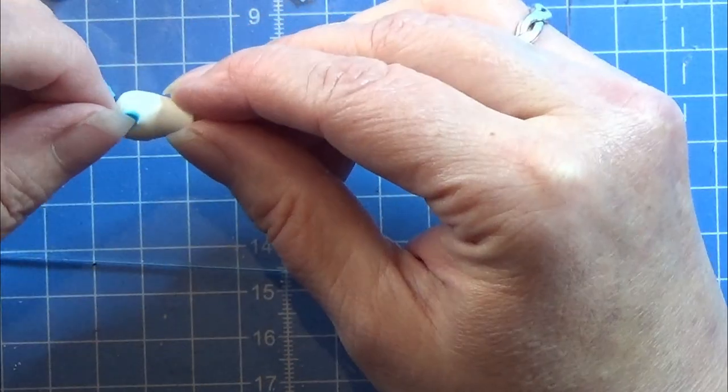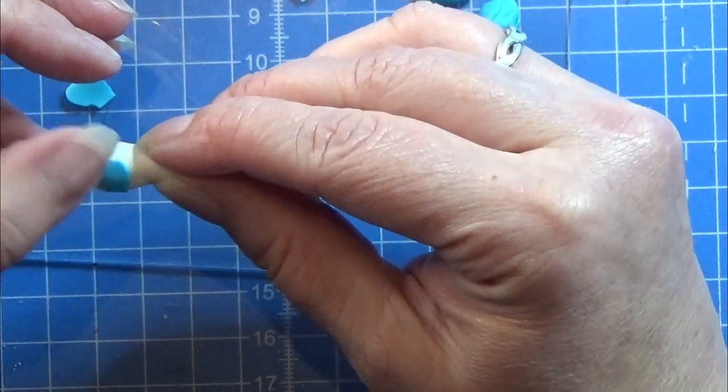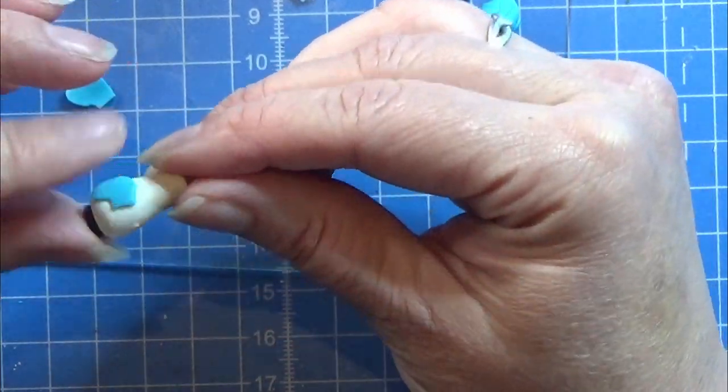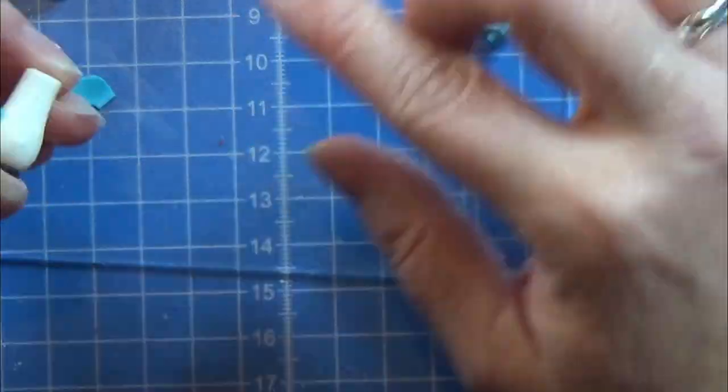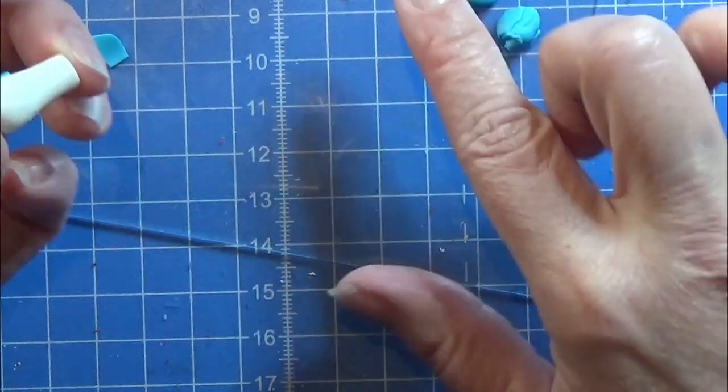You always want to have something in between like bake and bond or liquid Fimo. I like bake and bond for this better. So I'm just going to place one here, turn it around, and place the other one where I want it.